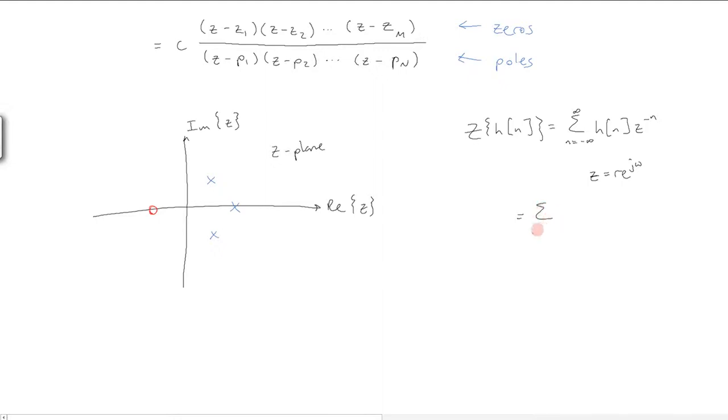This whole thing equals the summation of H of n times R to the minus n times e to the minus j omega n, breaking this up into two parts. This can be further written as the summation of H of n times R to the minus n times e to the minus j omega n.